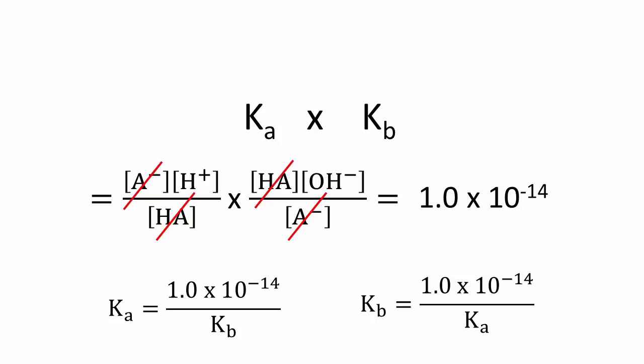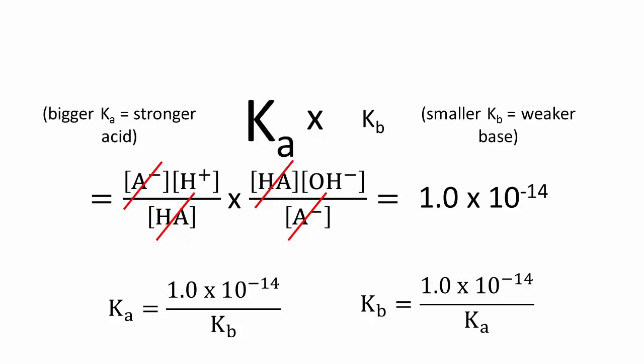Finally, this relationship shows that as the weak acid gets stronger and its dissociation constant gets bigger, the dissociation constant of its conjugate base must necessarily get smaller, as their product is fixed at 1.0 times 10 to the negative 14.